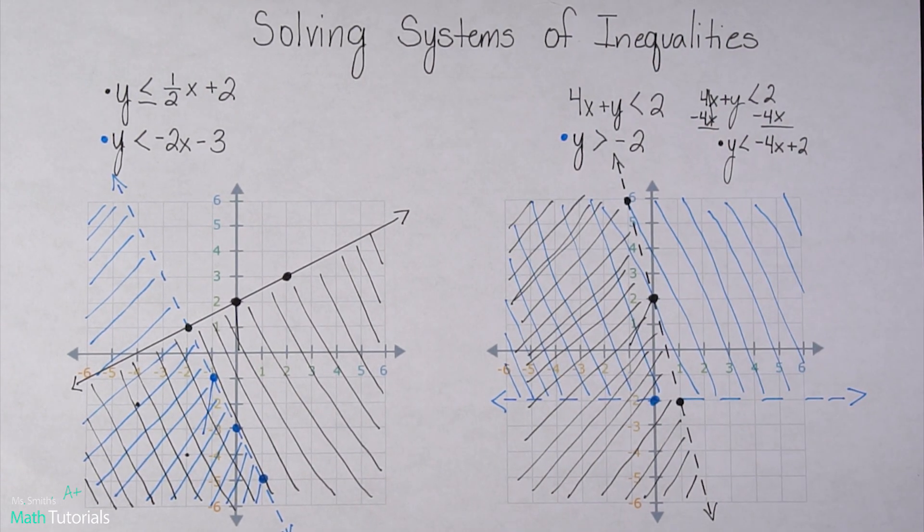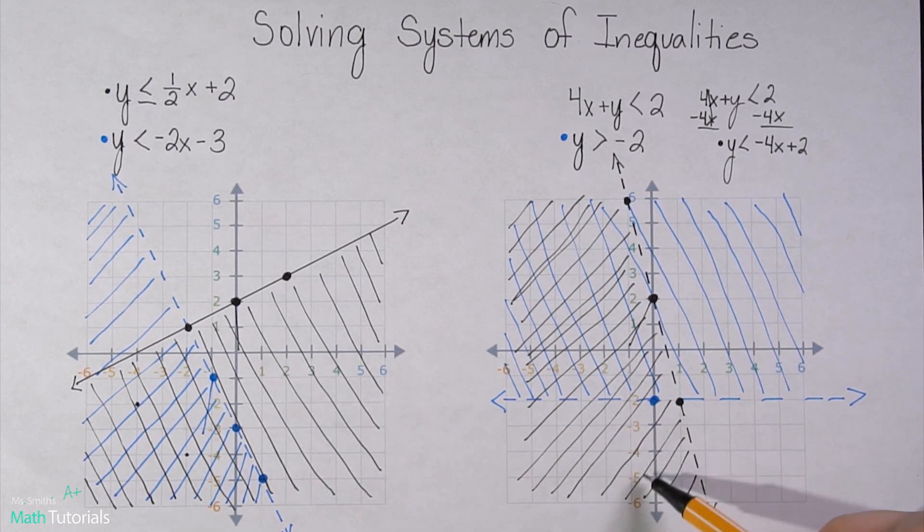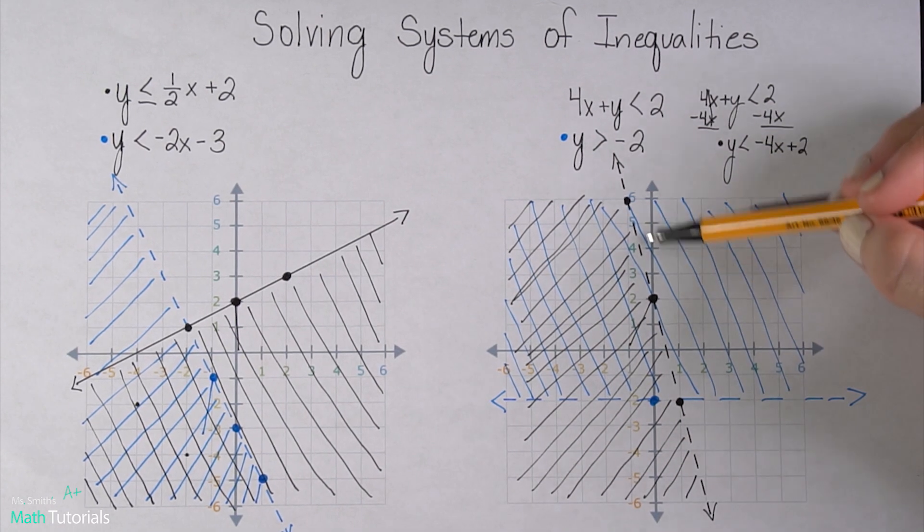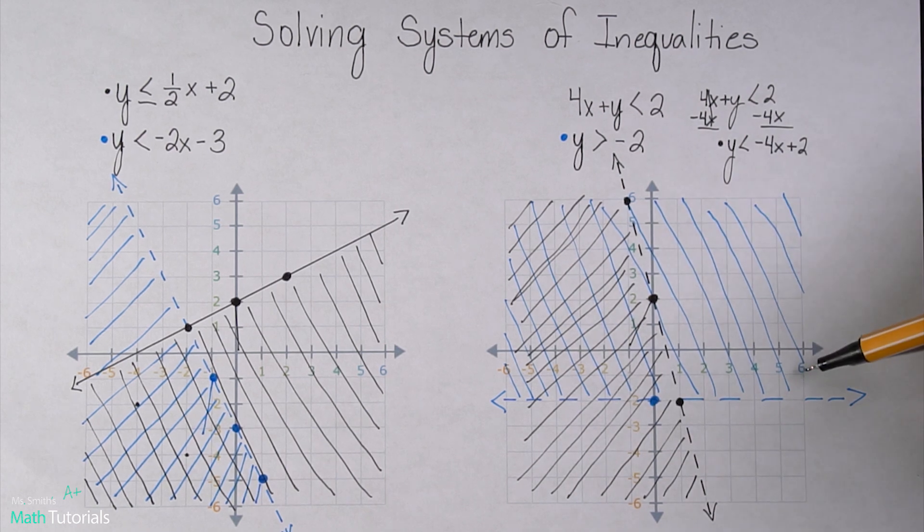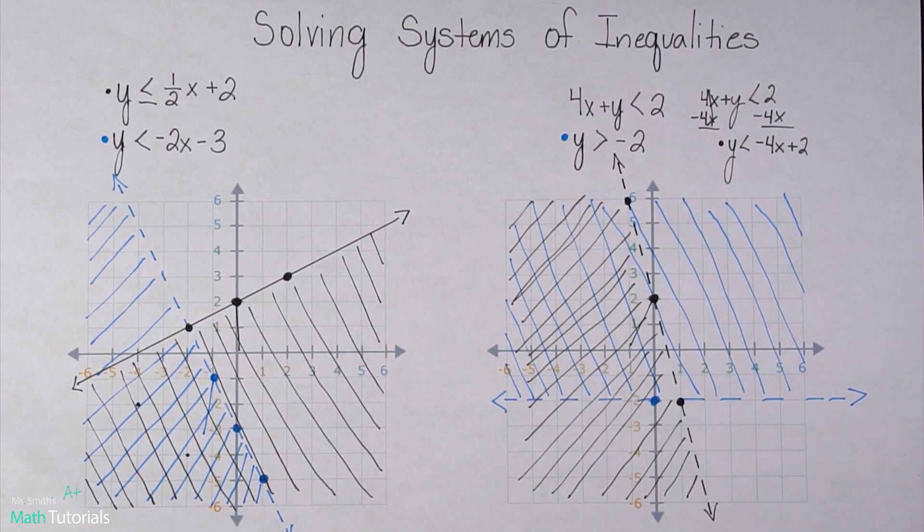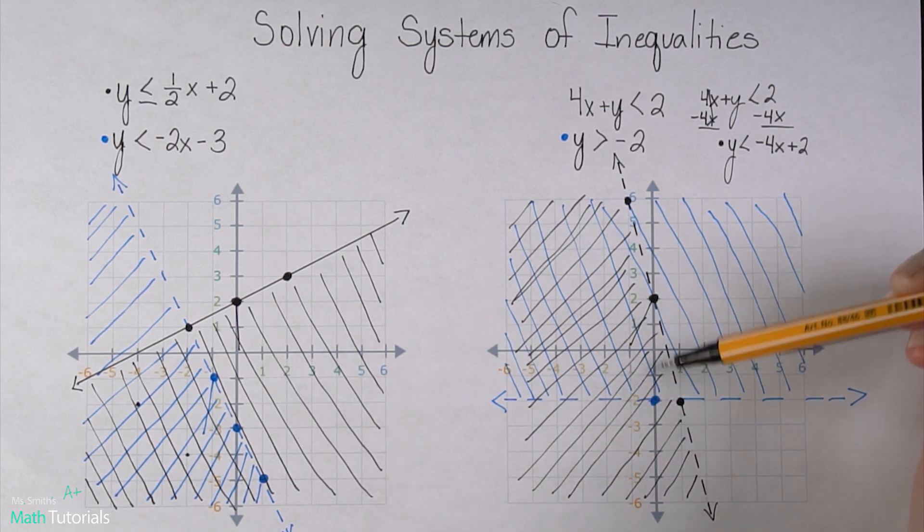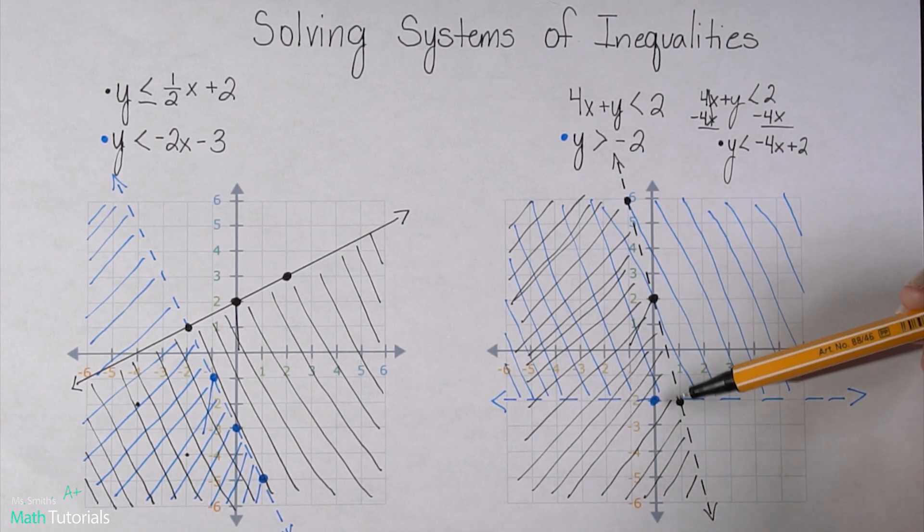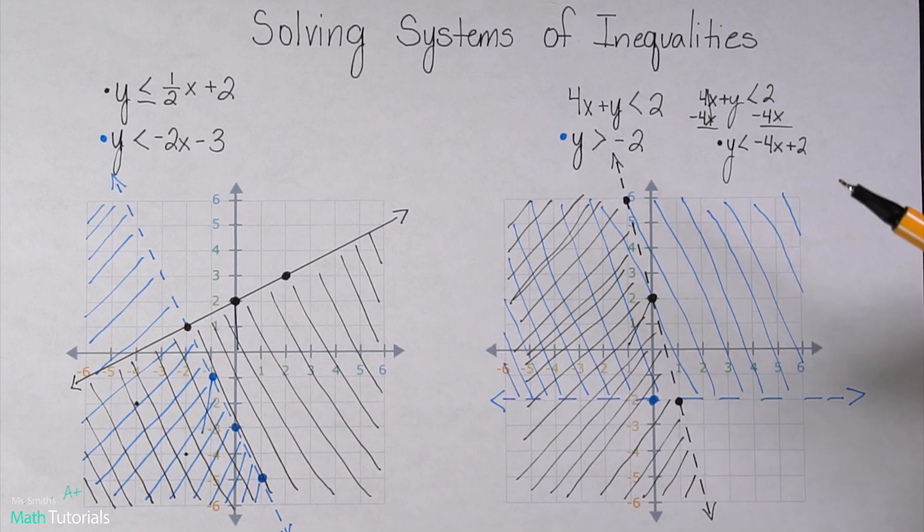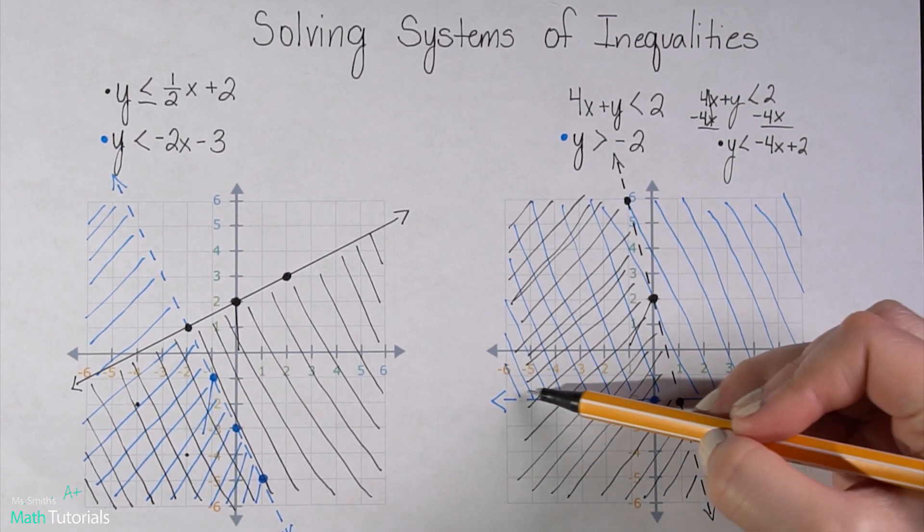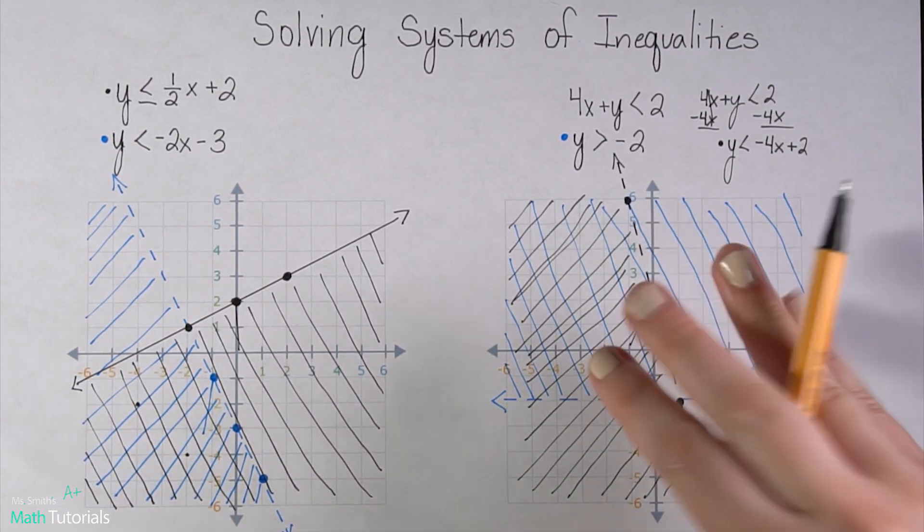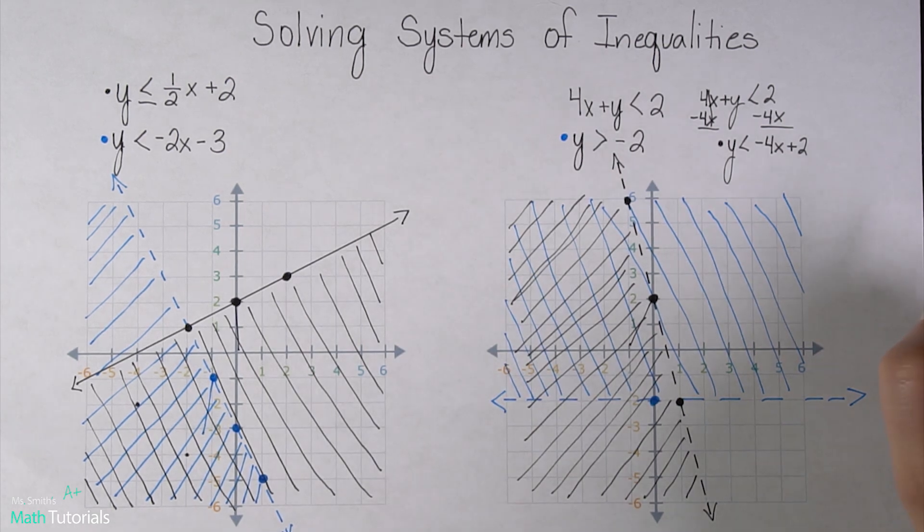So looking at this graph, you'll notice that everything down here is just black. Everything over here is just blue. Right here, I've got nothing. Okay, but this little corner, or big corner technically, is shaded in both blue and black. So anything that falls within this section and beyond is going to be in my solution set.